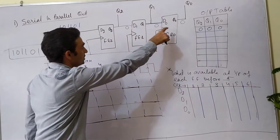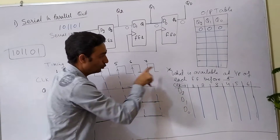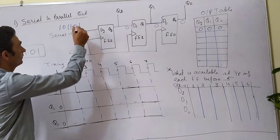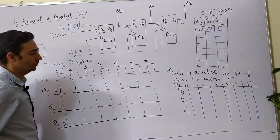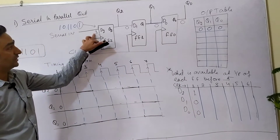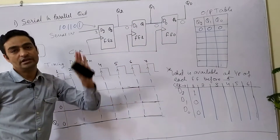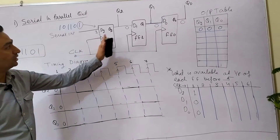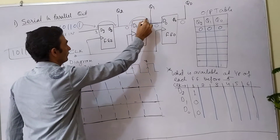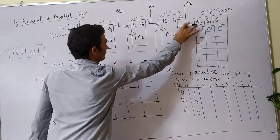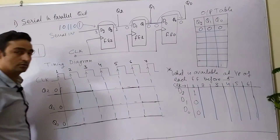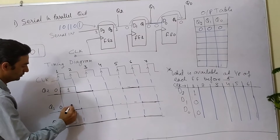The second step is: what is available at the input of each flip-flop before the first rising clock edge? Before the first clock edge, the data at the input will be 1, 0, 0 — that is, D2=1, D1=0, D0=0. After the rising edge of the clock, this same data will reach the output side. So after the first clock edge, output will be Q2=1, Q1=0, Q0=0.